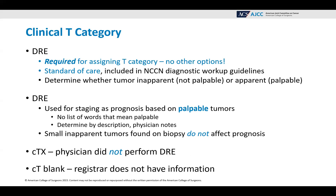The DRE is used for staging as the prognosis is based on palpable tumors. There is no list of words for the registrar to use that mean palpable. You have to determine this by the description in the chart and the physician notes. Small, inapparent tumors found on biopsy do not affect the prognosis, and that's why they're not included in staging — because AJCC staging is about the patient's prognosis.